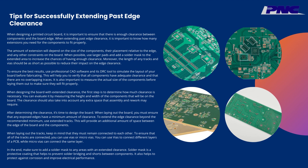It is also important to measure the actual size of the components before laying them out to make sure they will fit properly. When designing the board with extended clearance, the first step is to determine how much clearance is necessary — you can evaluate it by measuring the height and width of the components that will be on the board. The clearance should also take into account any extra space that assembly and rework may require. After determining the clearance, it's time to design the board, ensuring that any exposed edges have a minimum amount of clearance. To extend the edge clearance beyond the recommended minimum, use extended tracks, which will provide an additional amount of space between the edge of the board and the components.